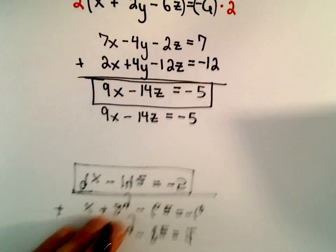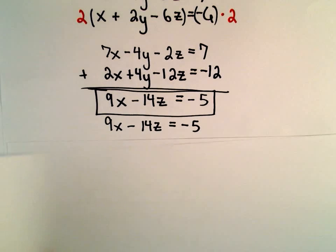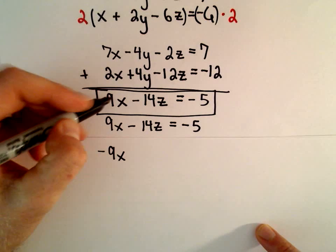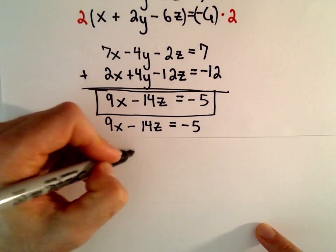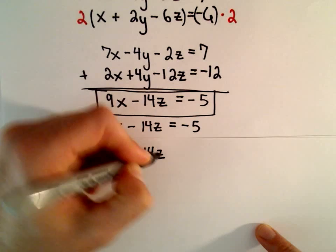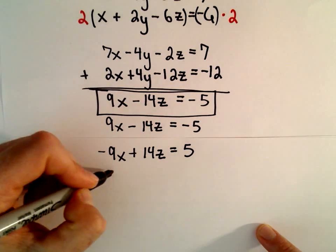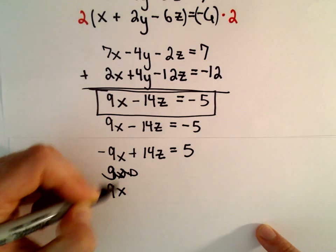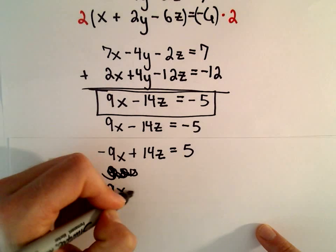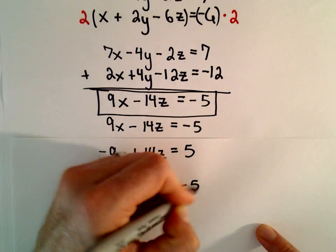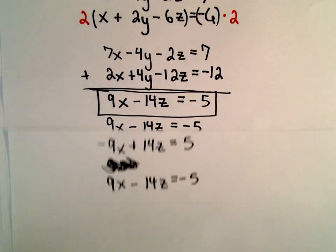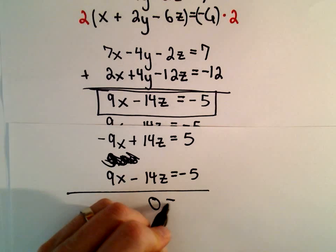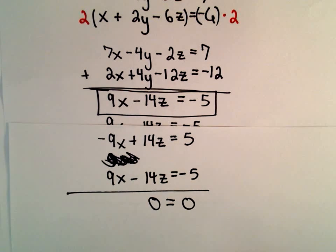So if you think about taking those two equations, if you multiplied one of them by a negative 1, say the first one by negative 1, we would have negative 9x plus 14z equals positive 5. Let's see, so then our second equation is going to be 9x minus 14z equals negative 5. If we add those two equations together, we would simply be left with 0 on the left side and 0 on the right side.